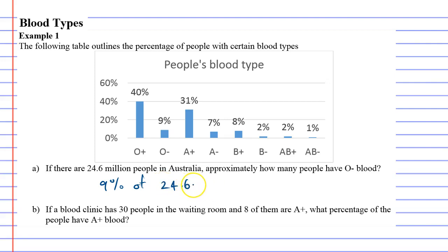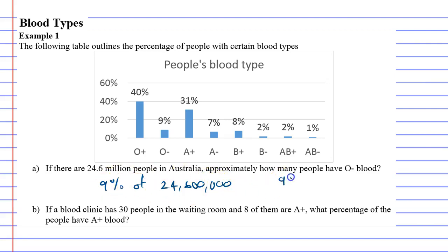To calculate this, I should write 24.6 million as a proper number: twenty-four million, six hundred thousand. To find the percentage of an amount, take your percentage, divide it by 100, and multiply by the amount — so 9 divided by 100, times 24,600,000.